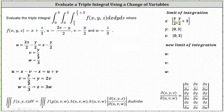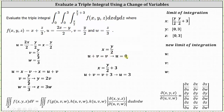Now we'll find the new limits of integration for u, starting with the lower limit for x, which is x equals y divided by two. We know x equals u plus v and y divided by two equals v. Solving for u gives u equals zero, which is the lower limit of integration for u. Starting with the upper limit for x, which is x equals y divided by two plus three, we substitute u plus v for x and v for y divided by two, and solve for u, which gives u equals three. Therefore the interval of integration for u is from zero to three.